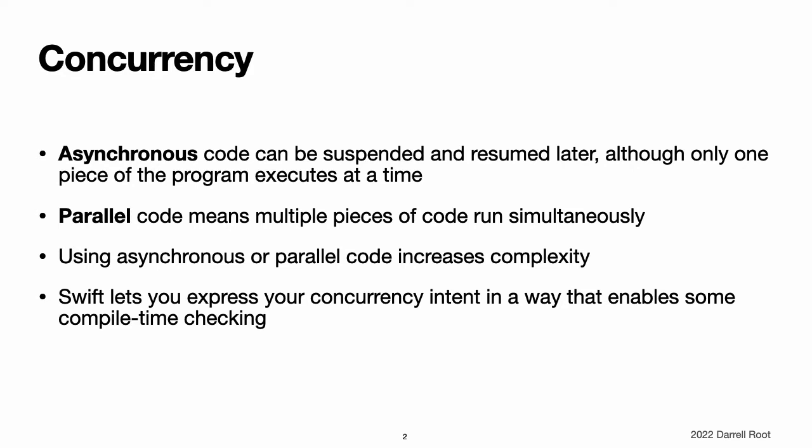Parallel code means multiple pieces of code run simultaneously. For example, a computer with a four-core processor can run four pieces of code at the same time, with each core carrying out one of the tasks. A program that uses parallel and asynchronous code carries out multiple operations at a time. It suspends operations that are waiting for an external system and makes it easier to write this code in a memory-safe way.